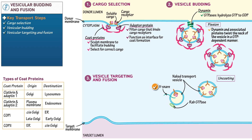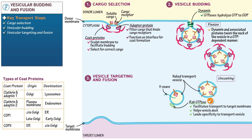Write that the Rab GTPase facilitates the transport of the vesicle to its appropriate target membrane by associating with cytoskeletal motors. Write that it also helps the vesicle dock at the correct target membrane, lending specificity to the transport vesicle. Different Rab GTPases correspond to different target membranes. It also participates in the fusion of the vesicular and target membranes. We'll illustrate the function of V-snare protein shortly. Now on the target membrane, draw a filamentous tethering protein. Next to it, draw a T-snare.